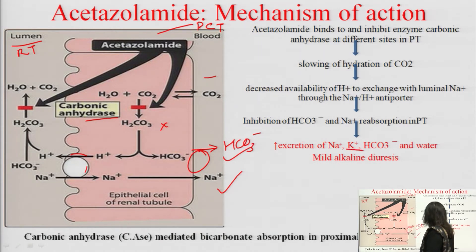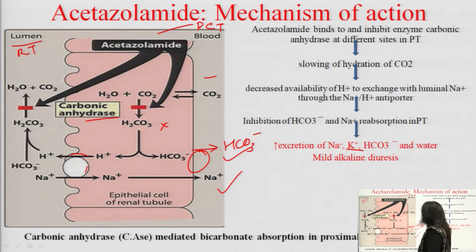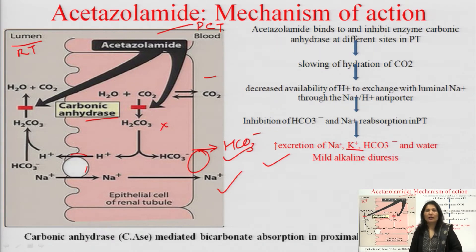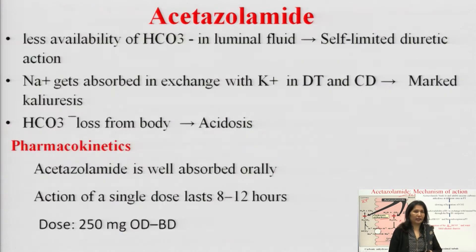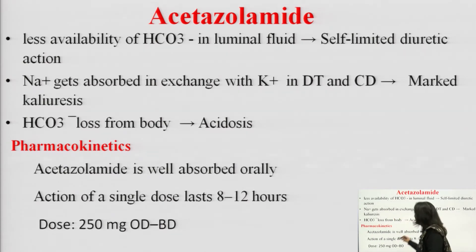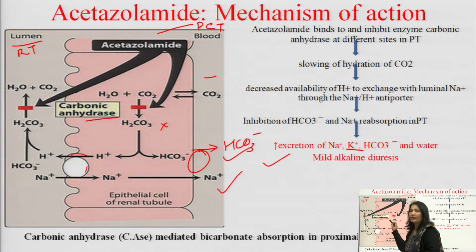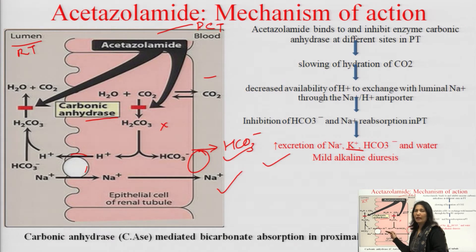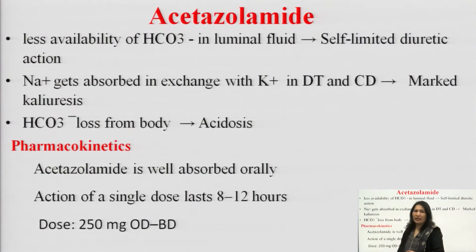Potassium is excreted because the increased sodium load goes to site 4 — the late distal tubule and collecting duct — where sodium-potassium exchange results in potassium excretion. Due to bicarbonate loss from the body, metabolic acidosis occurs, but urine is alkaline. It is also a self-limited diuretic action because when bicarbonate levels fall, there is less substrate for carbonic anhydrase to act upon.